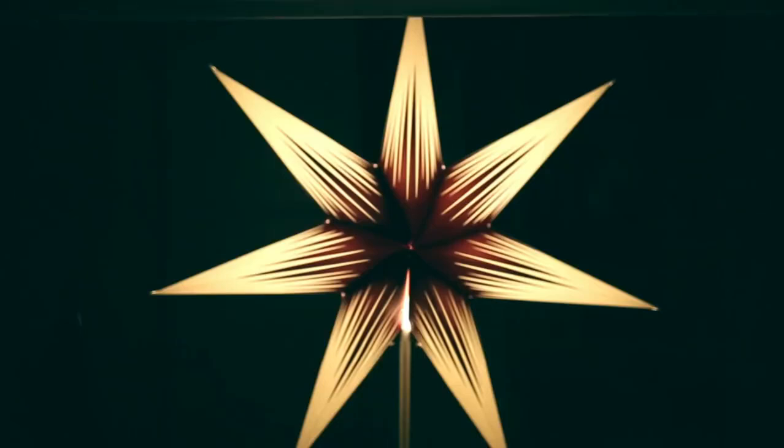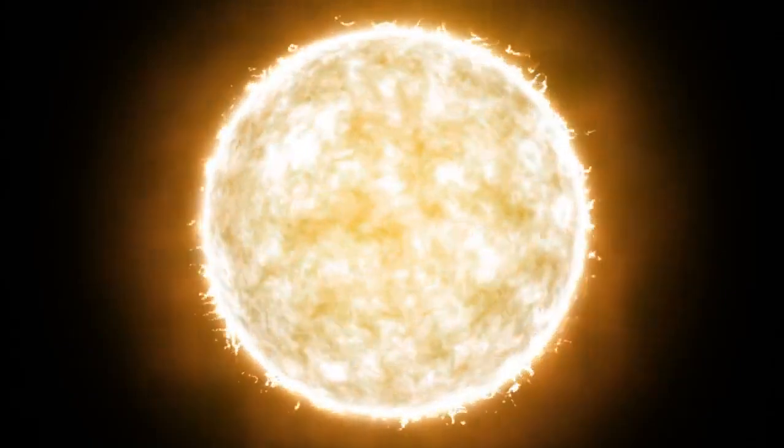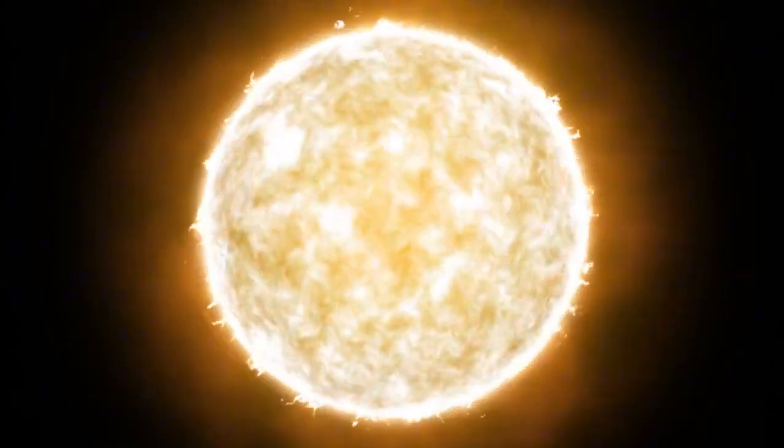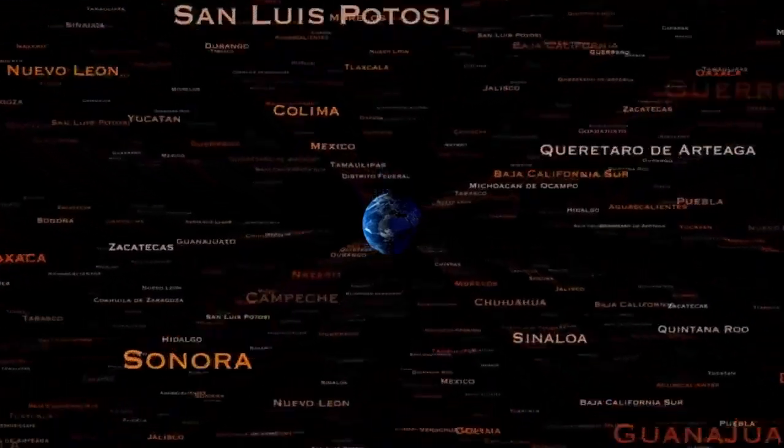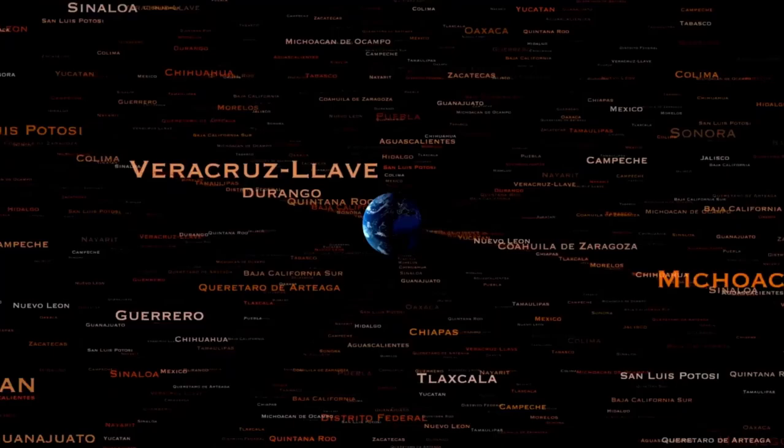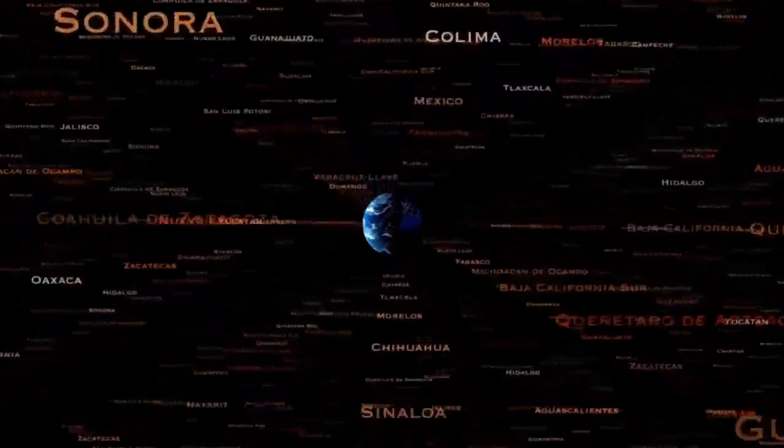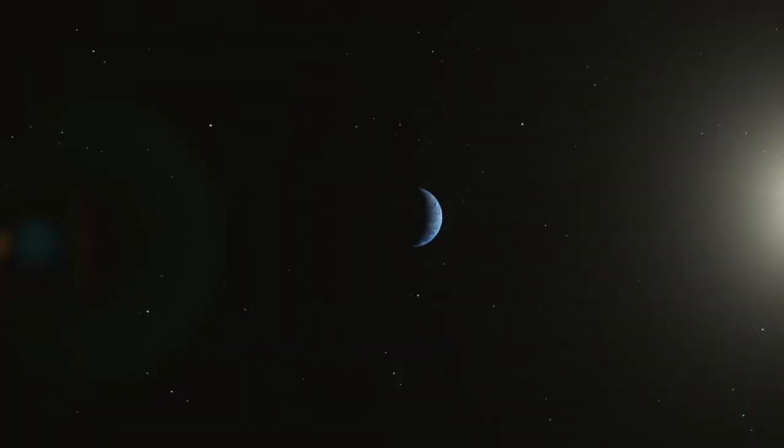Red supergiants like Betelgeuse are famous for changing how bright they appear. Scientists think this change is just a normal part of their existence. But something really big happened when Betelgeuse got dimmer than usual. People in the science world heard about Betelgeuse losing its brightness mysteriously. This got scientists thinking up different ideas. Some said maybe a huge flow of gas and dust from the star's surface caused this dimming. They pictured the star going through a lot, throwing off its outer parts in a huge show in space.